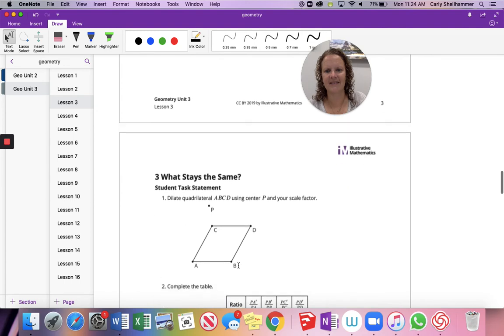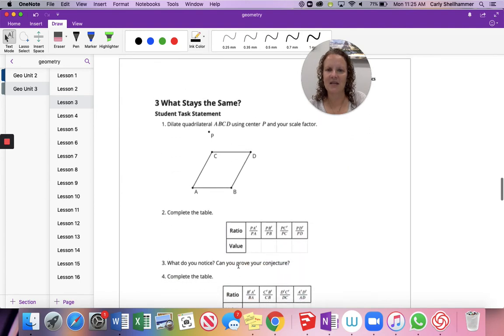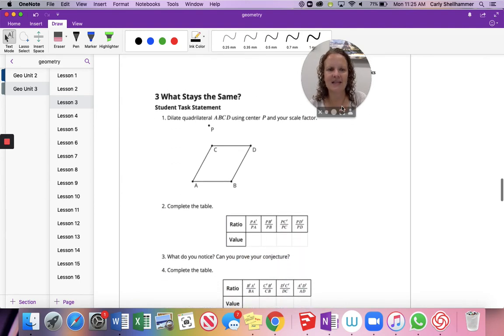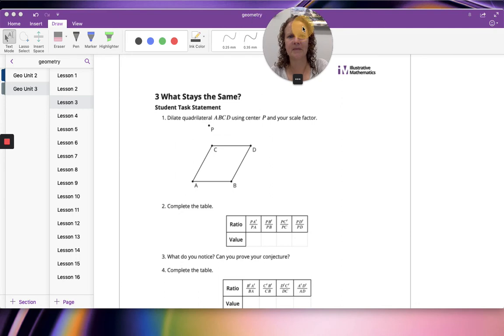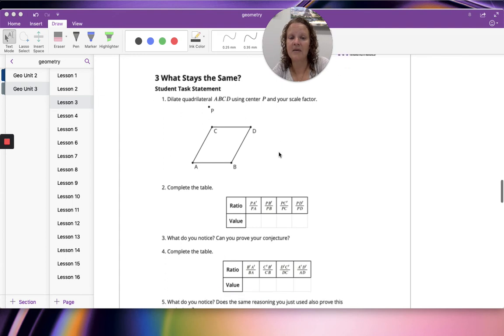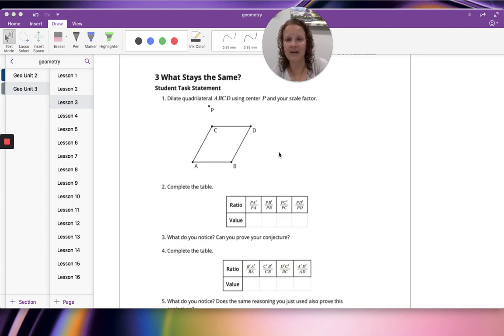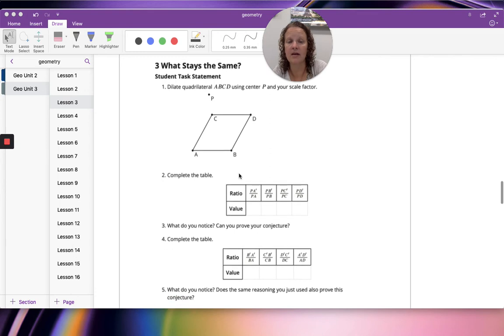Now let's go here. What stays the same? Dilate quadrilateral ABCD using center P and your scale factor. And then complete the table. So we're measuring P to A prime and P to B prime. Let me set this up in GeoGebra, and I will be right back.